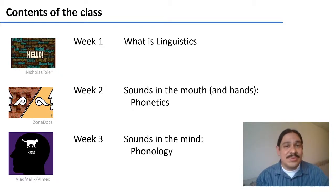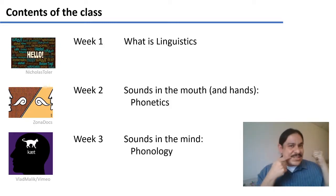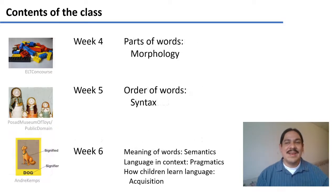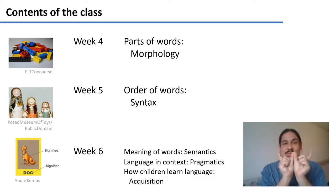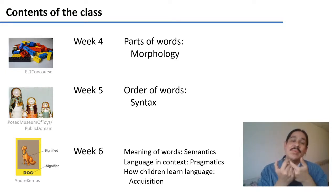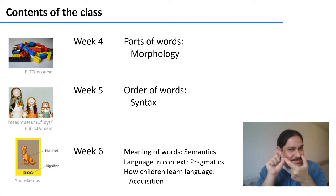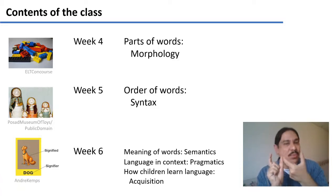On week three, we'll study phonology, which is the study of how sounds work in your brain. Phonetics happens in your mouth or your hands; phonology happens in your brain. On week four, we'll study how those components come into units that have meaning, and those units are called morphemes. For example, the word 'cats' has two morphemes, or meaning units: 'cat,' which is the name of the animal, and the 's,' which tells you that there's more than one cat. These are two morphemes, and we'll study them in morphology.